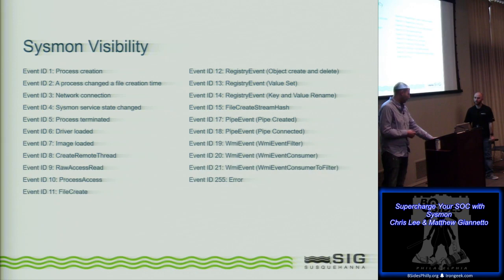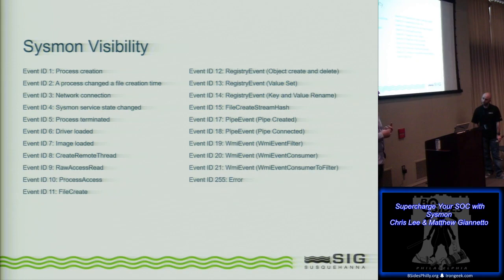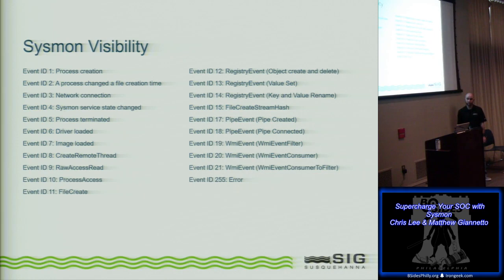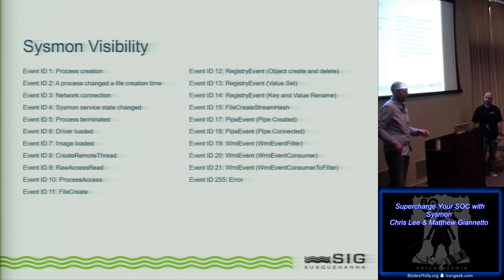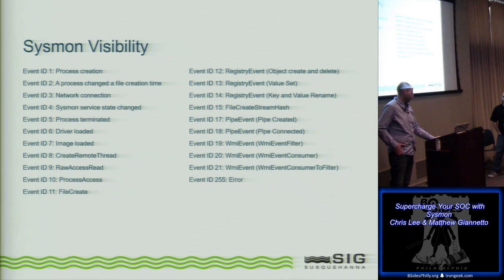There are quite a few other event types. Sysmon is actively being developed — every couple of months a new version comes out with new event IDs. The most recent additions were Pipe Events, IDs 17 and 18, and in the latest version, WMI Events, IDs 19 through 21. They're really tracking what they're seeing in malware and attack tools being released, trying to add features that detect those types of techniques.